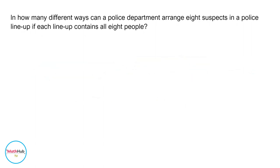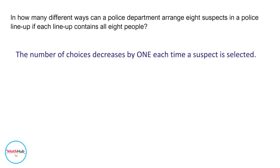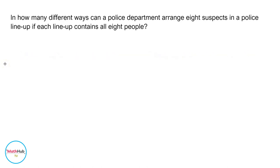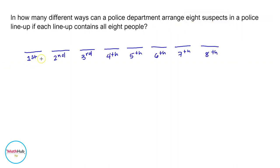Next problem: in how many different ways can a police department arrange eight suspects in a police lineup if each lineup contains all eight people? Notice again that the number of choices decreases by one each time a suspect is selected. To count the number of ways, we have eight spots because we have eight people. For the first position, we pick from all eight suspects, so we have eight choices.